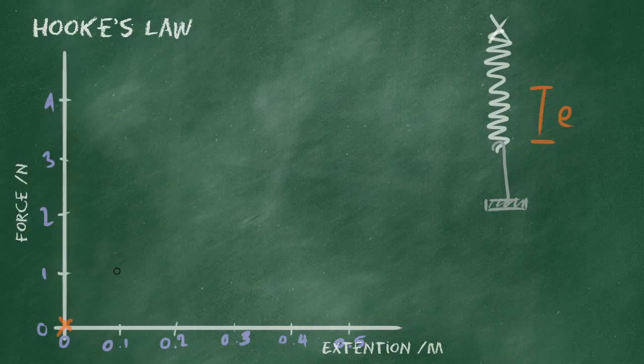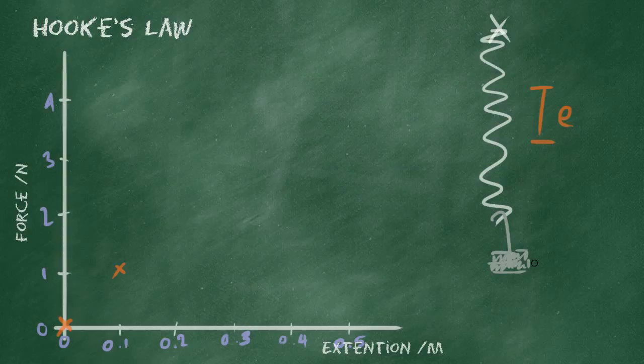One newton mass, one newton weight, 100 gram mass, 0.1 metres is what I would measure if I was doing this. Then add another mass. So now we've got two newtons of force and measure the extension from the original length down to the new length. And you can see we've got the same extension again. So the total extension at two newtons is 0.2 metres.